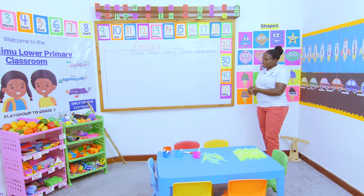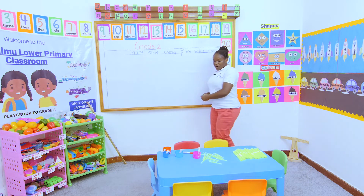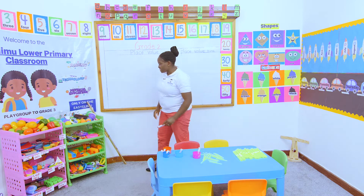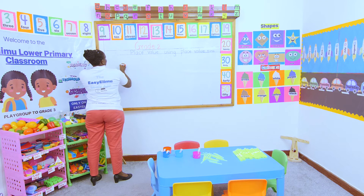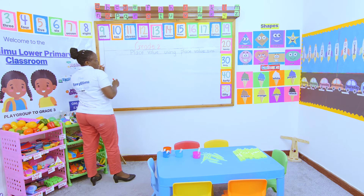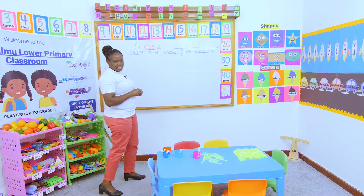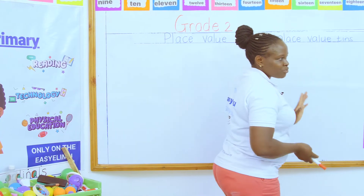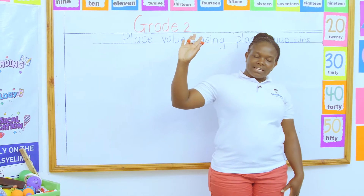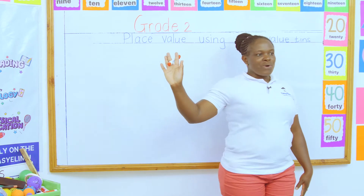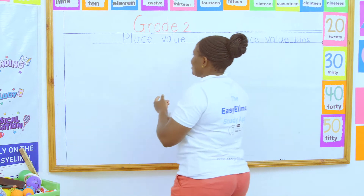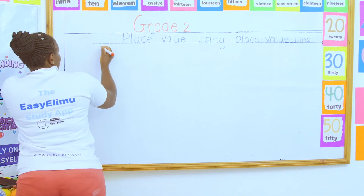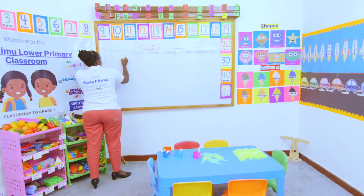What did we say the rule for place value is? The rule for place value: we said first you must know — are we talking about the ones, or are we talking about the tens? We said ones are on which side. When I stand like this, the right hand represents the ones, and then tens are on the left.